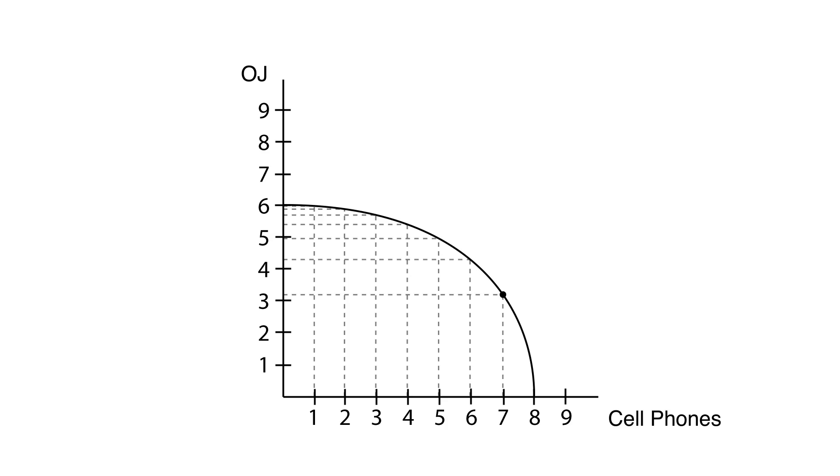What we've been doing is adding cell phones and looking at what we give up in orange juice. At first, we give up very little. The amount we're giving up doesn't seem to change much as we get more cell phones.